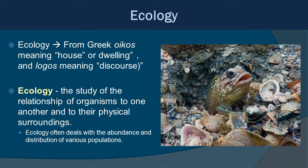The term ecology comes from the Greek oikos, meaning house or dwelling, and logos, meaning discourse. Ecology by definition is the study of the relationship of organisms to one another and their physical surroundings. Essentially, ecology often deals with the abundance and distribution of various populations. The fish on the right is a jawfish, a great example of that interaction — it's digging a hole, picking up shells and spitting them out. It's also a predator looking for little shrimps and crabs to eat, interacting with its environment and other species around it.